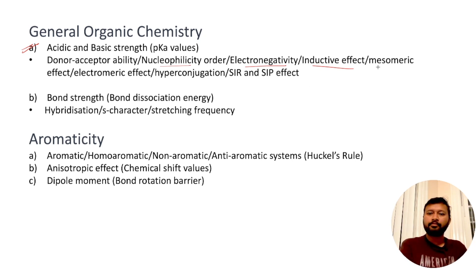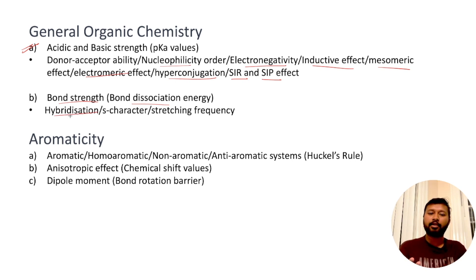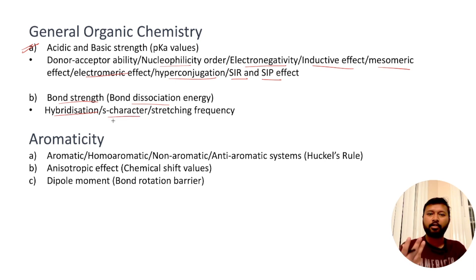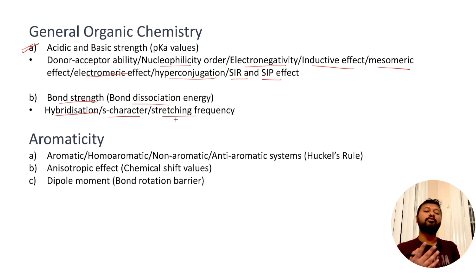You should be aware about mesomeric effect, electromeric effect, hyperconjugation, Markovnikov rule, and anti-Markovnikov rule. Then the concept of bond strength and bond dissociation energy — you need to understand how change in hybridization makes a difference in bond strength, how s-character defines the acidity of an organic molecule, and how stretching frequencies depend on hybridization and bond strength. Higher bond order means higher stretching frequency, so a triple bond will always have a higher frequency compared to a single bond.